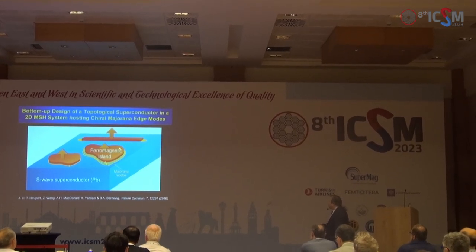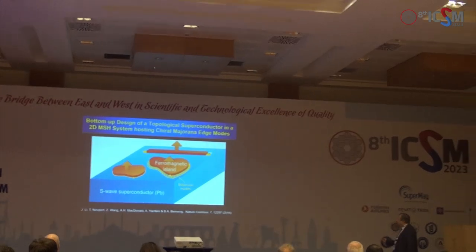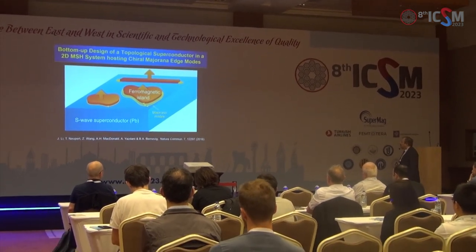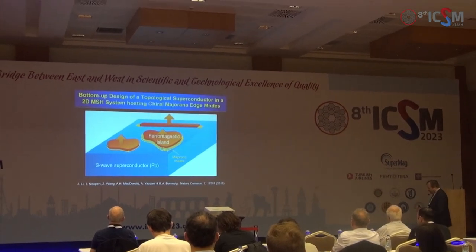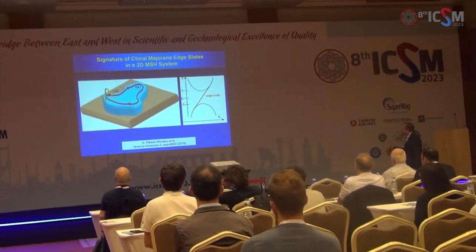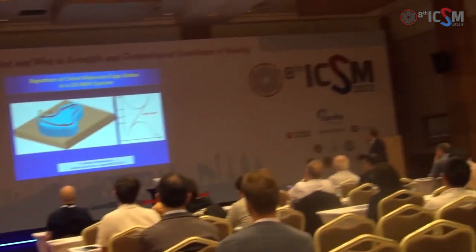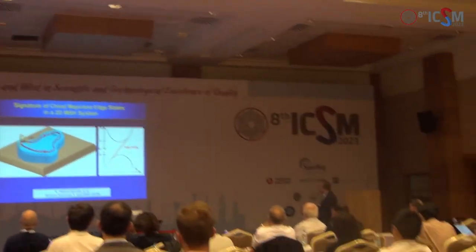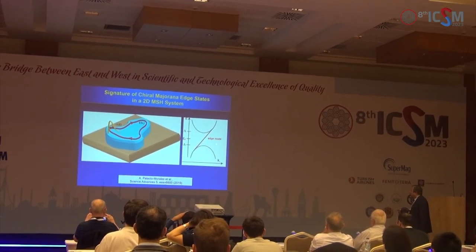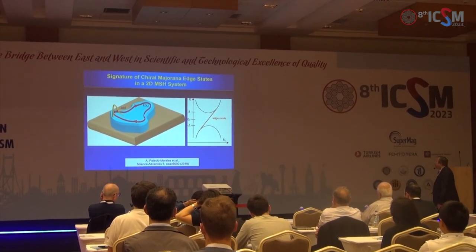These are Chiral Majorana modes at the periphery of the island, and they should not be confused with Majorana zero modes as end states in quasi-one-dimensional systems, which were proposed earlier. What is the difference? These Majorana modes in quasi-two-dimensional systems have a dispersion—energy as a function of wave vector—showing a gap in the superconductor and a dispersive edge mode. You see them only at the periphery, while the bulk interior of the island should be gapped out.